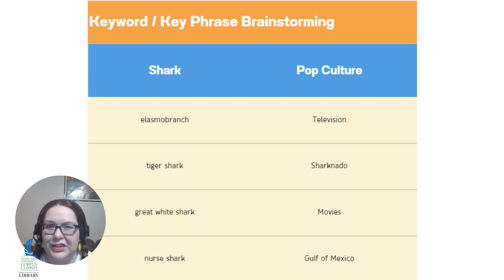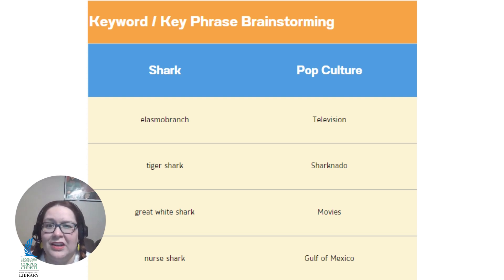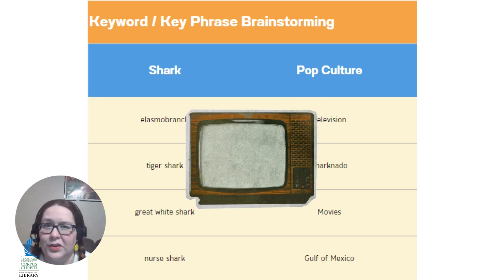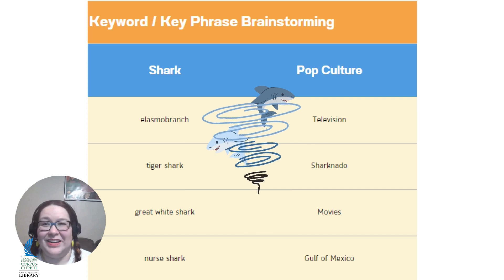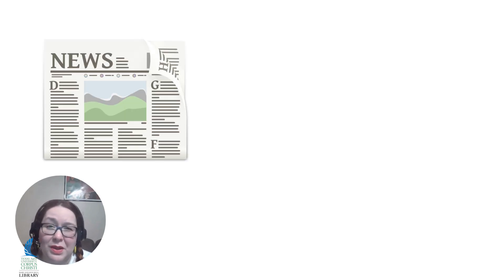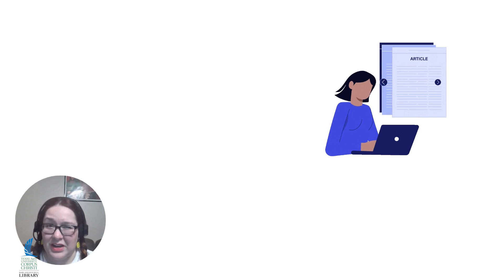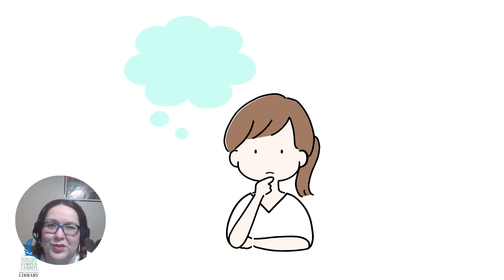Now that we have our research question, we can revisit any keywords or key phrases that we might have already brainstormed, and maybe modify or add to them as needed. Some examples for sharks in pop culture are here on the screen — words like television, TV, film, movie, cartoon villains, Sharknado, and so on. Other things to consider — a callback to Research Skills 101 — what kind of sources should we consider? Maybe newspapers, maybe peer-reviewed journals, or a combination of the two? Are there others that might prove useful? Something to think about as you start your research.